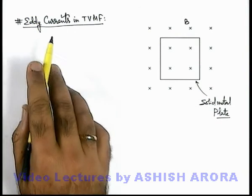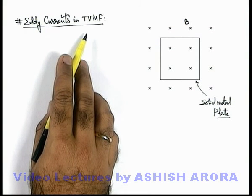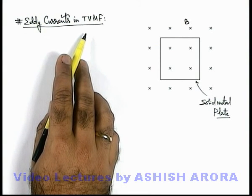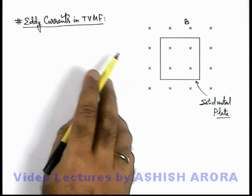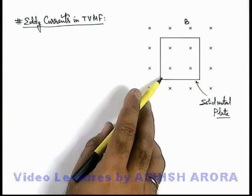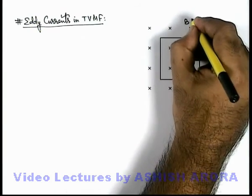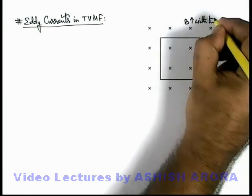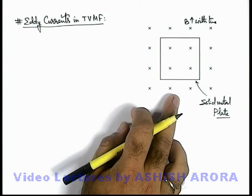Now let us study about eddy currents in time-varying magnetic field. In the previous section we studied about eddy currents when the magnetic field is not changing with time but there exists a motion in the conductor. Here we are discussing when the conductor is at rest — you can see there is a solid metal plate which is at rest, and the magnetic field is increasing with time.